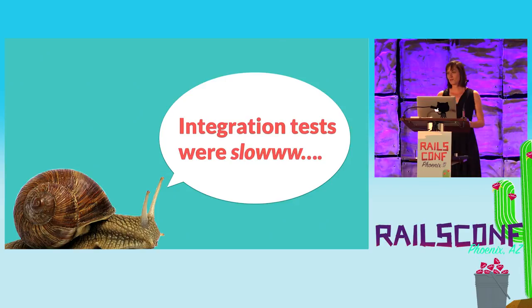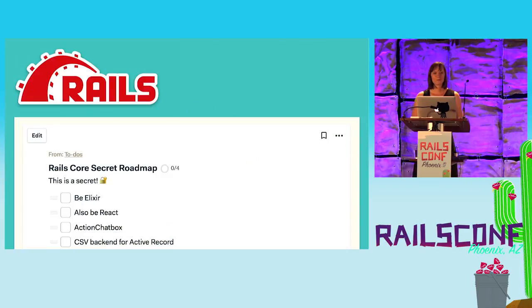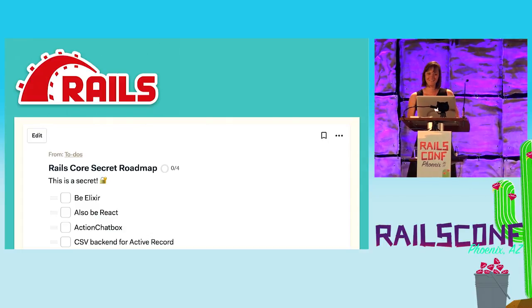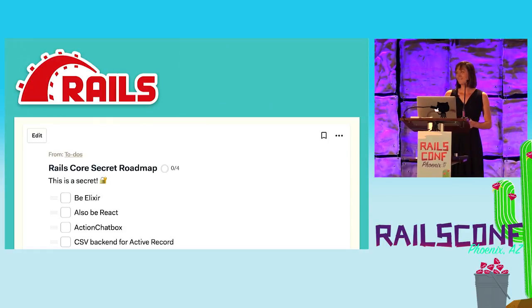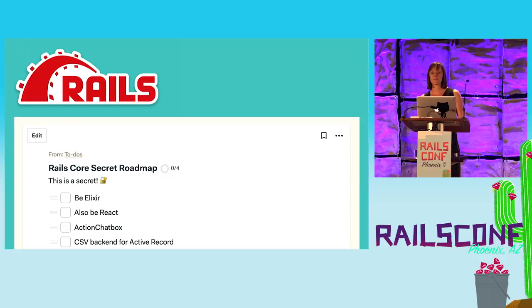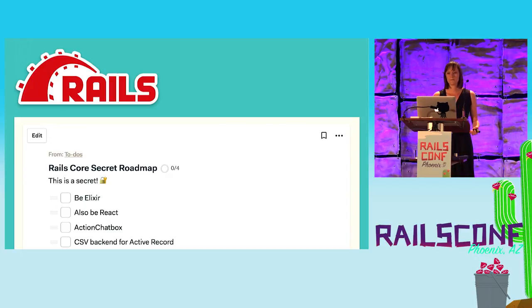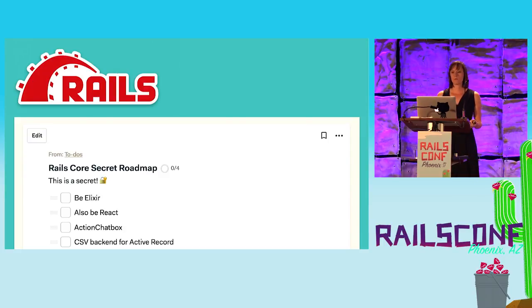Another reason system tests took three years is that contrary to what many may think, the Rails core team does not have a secret Rails feature roadmap. Rails is a volunteer effort — if there isn't someone interested in implementing a feature, it's not going to get implemented. We each work on what we're passionate about, and often features grow out of real problems that we're facing with our applications at work. System tests are a really good example of this.